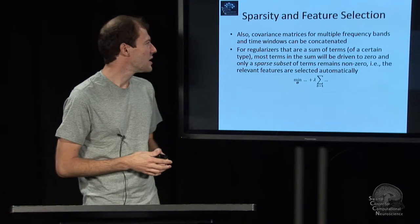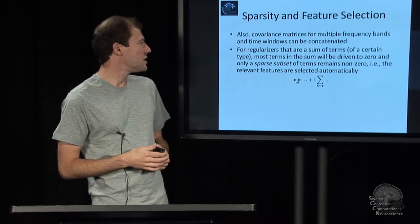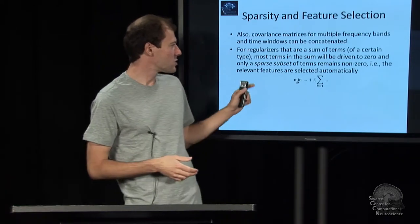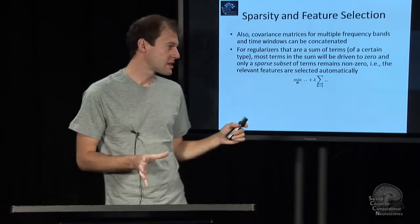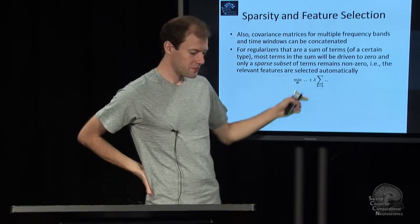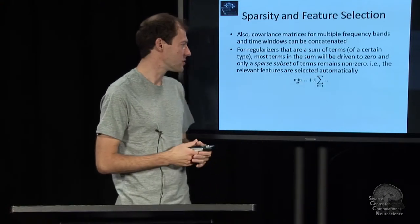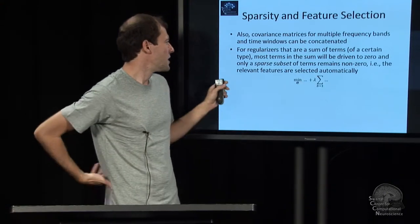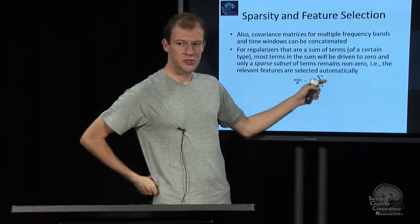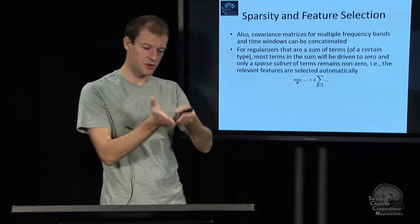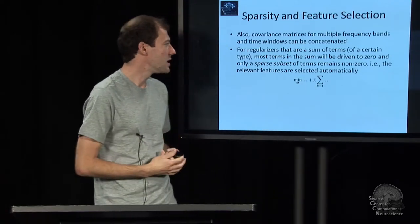It turns out that when you're having regularizers of this kind of general form that act like an L1 penalty on something, some function of your weights, so you have a sum of terms of a certain type, non-negative, if there's some singularity at zero, and so on.